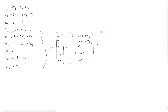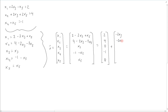We can split this up in terms of the constants and the free parameters. The constant vector is (2, 4, 0, negative 1, 0). Then everything in terms of x3: negative 2x3, negative 2x3, x3, 0, 0 — since x3 doesn't appear in the last two expressions. And everything in terms of x5: x5, negative 2x5, 0, negative x5, x5.